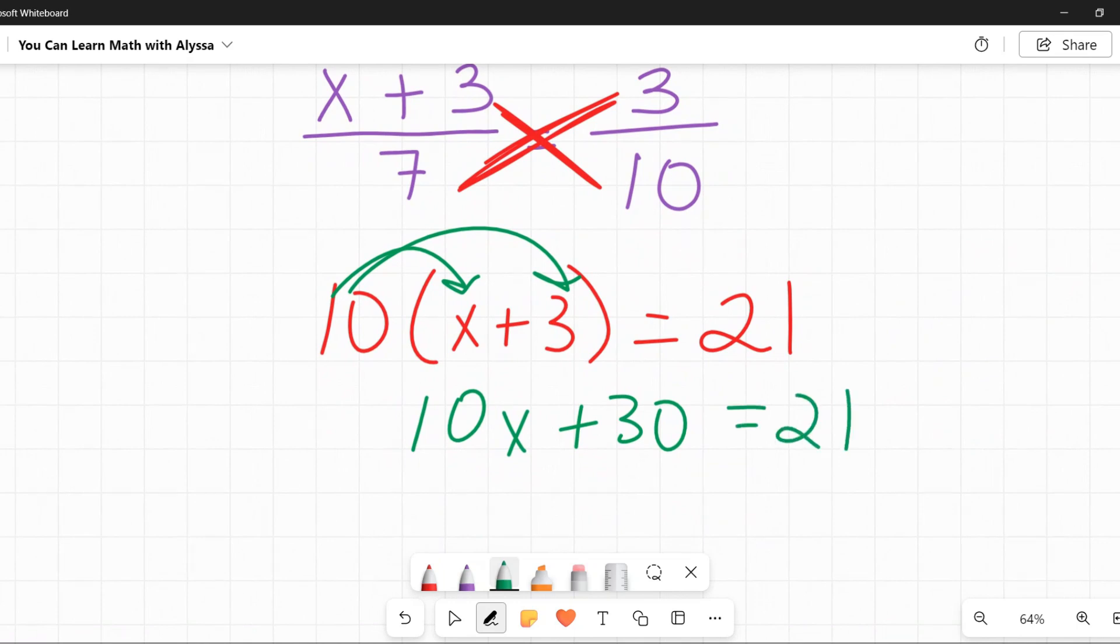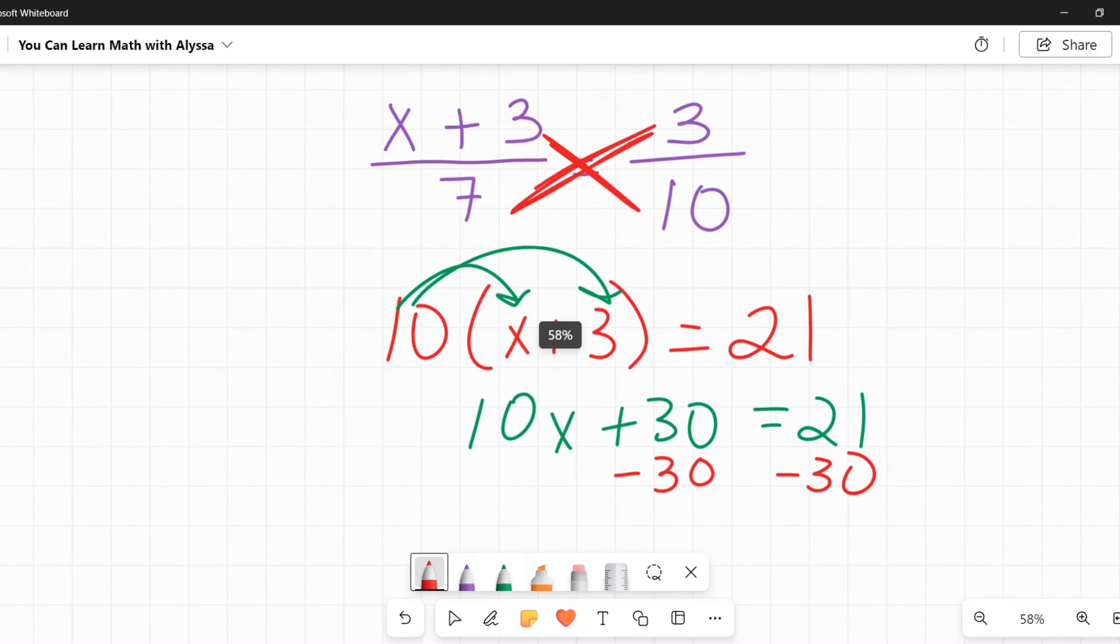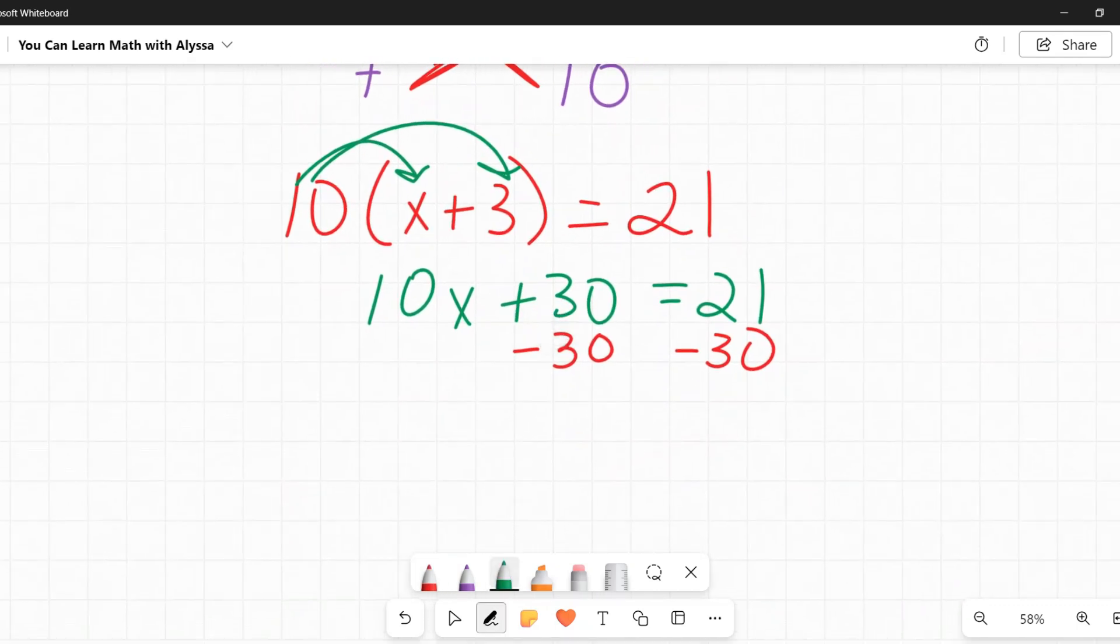Now to solve for x, first I need to get rid of that 30, so I'm going to subtract it from both sides. And on the left side, I will be left with just 10x, and on the right side, 21 minus 30, which is negative 9.